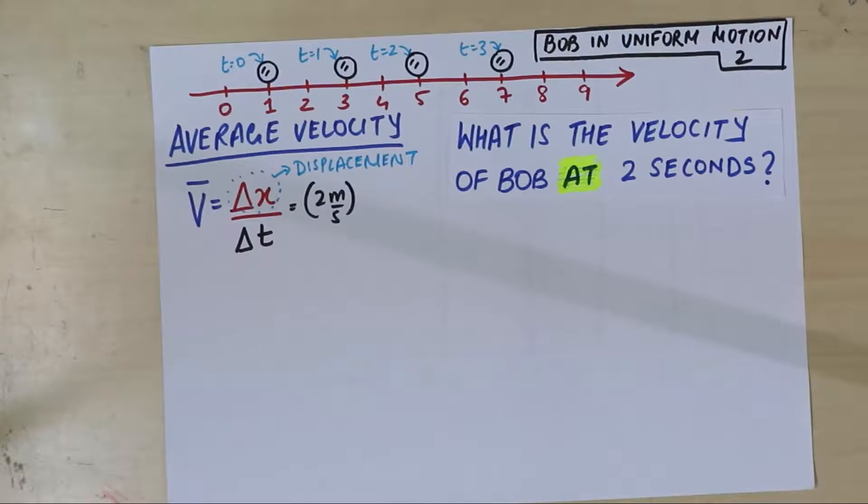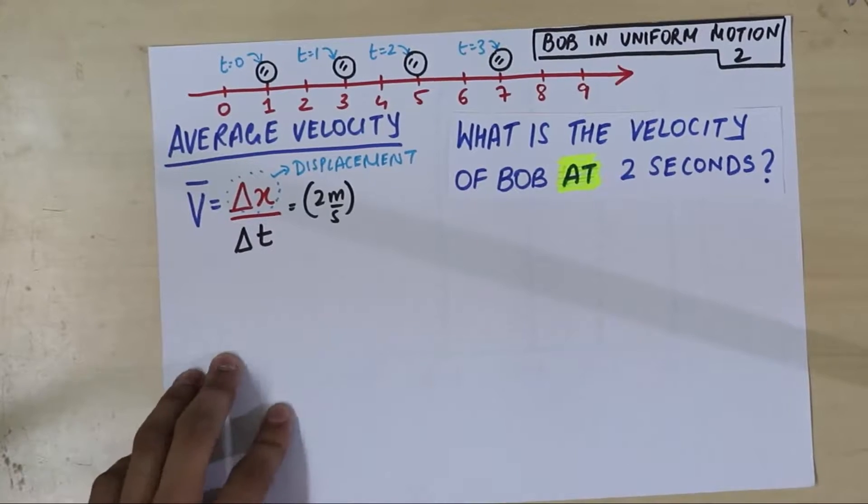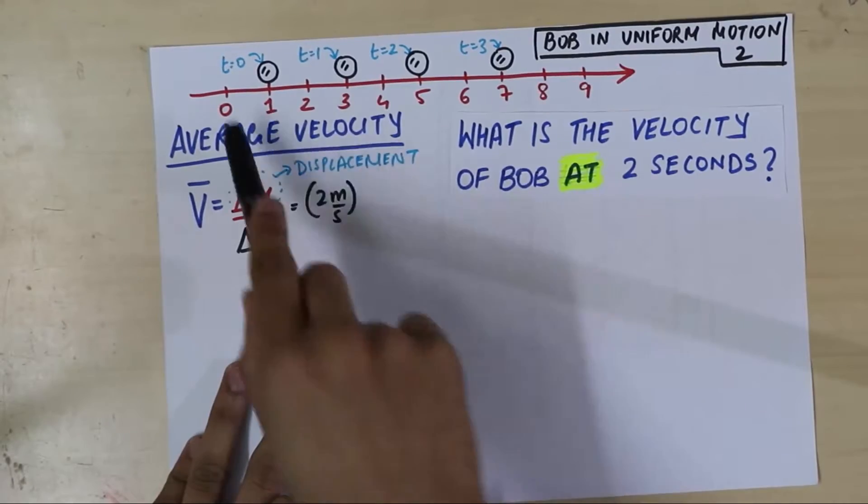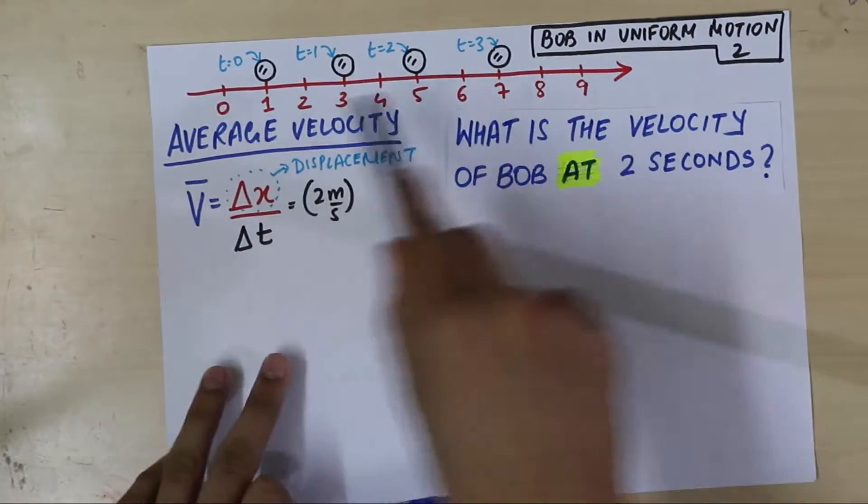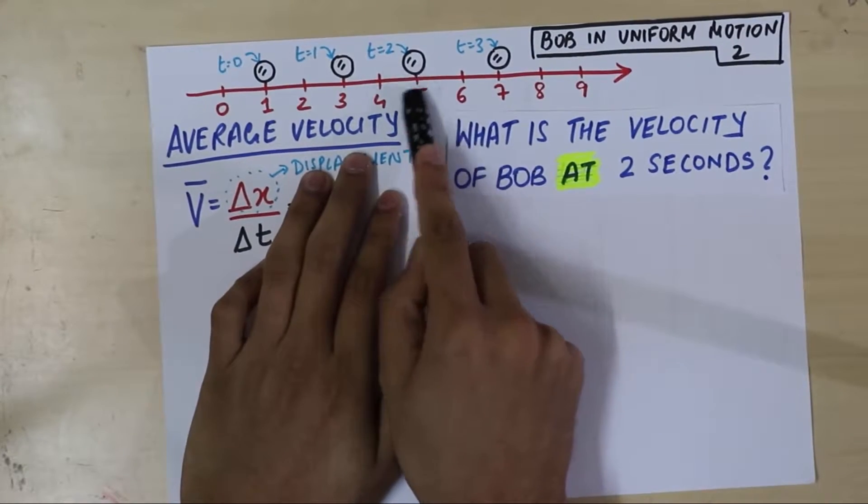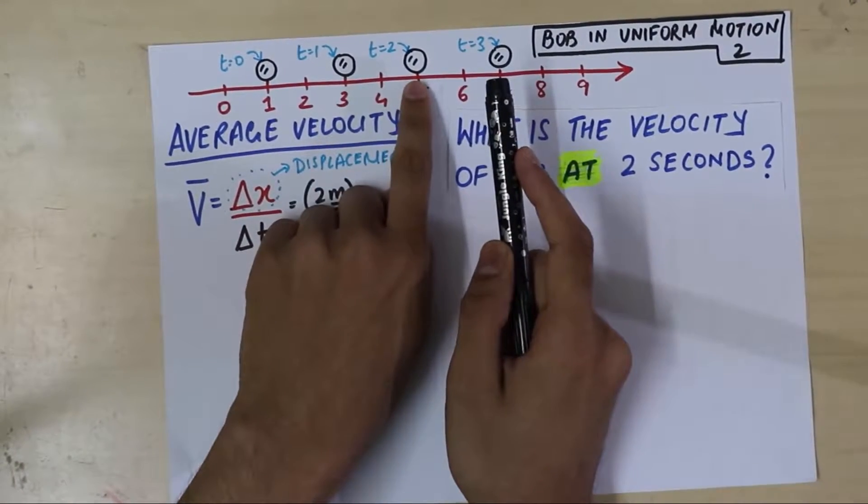Well, the first thing is, we'll just use this equation and let's see if we can do something with it. Again, we have the same situation as we had before, Bob in uniform motion. We did this last time. So, the same drawing as you see. So, what we are going to do is, we are trying to find out the velocity at this moment in time.